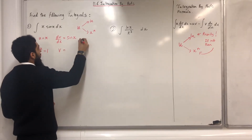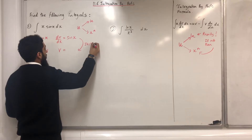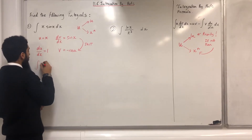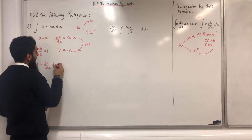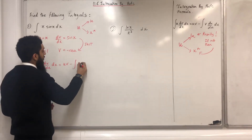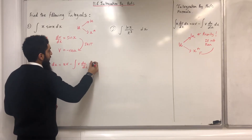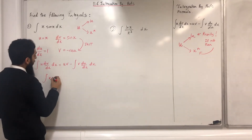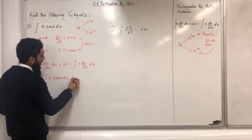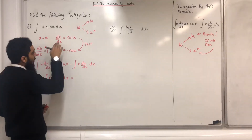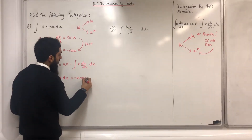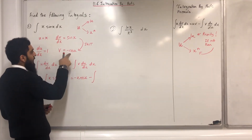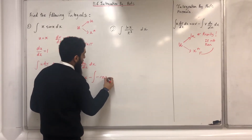To find v I have to integrate. So if I integrate sin x, I get minus cos x. Now, the integral of u dv/dx dx equals uv minus the integral of v du/dx dx. Applying this integration by parts formula: the integral of x sin x dx equals uv, so x multiplied by minus cos x, giving minus x cos x, minus the integral of v du/dx, which is minus cos x times 1, so minus cos x dx.